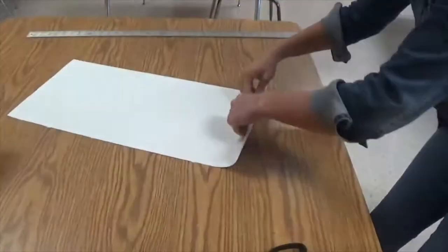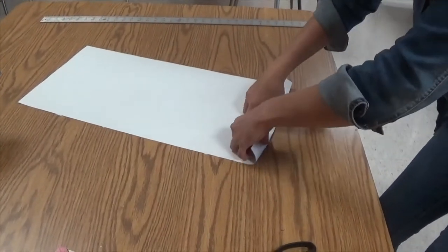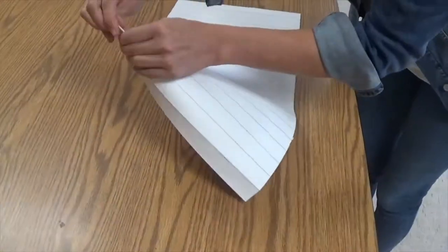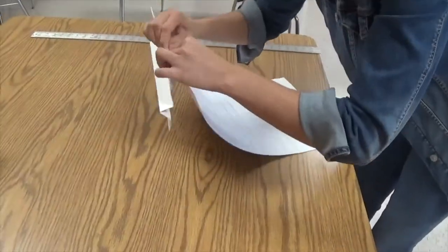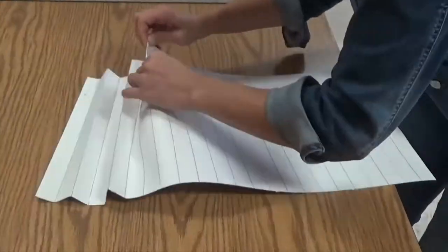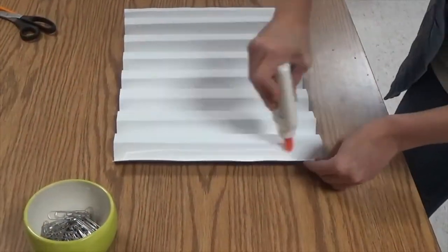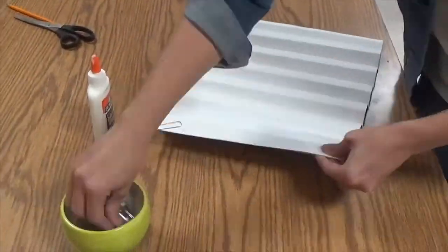After you have measured out your paper, you will then label each strip VHH, which stands for Valley Hill Hill, which is how you will fold your paper. Valley is a flat surface and hill will be folded. You will repeat this pattern all the way down the paper. When your paper is folded, you will glue the hills together and add paper clips to secure them in place while they dry.